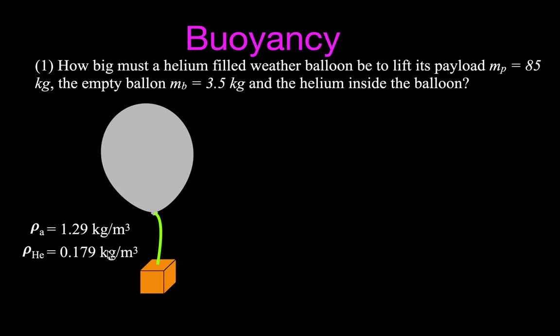The first thing we need to do is draw the free body diagram showing all forces acting on the balloon. The buoyant force acts upward. The force from the payload acts downward. The force from the balloon acts downward. And the force from the weight of the helium also acts downward. We add up all those forces and we can solve for the buoyant force — the minimum force needed to lift all three objects. We write: the sum of forces equals zero.